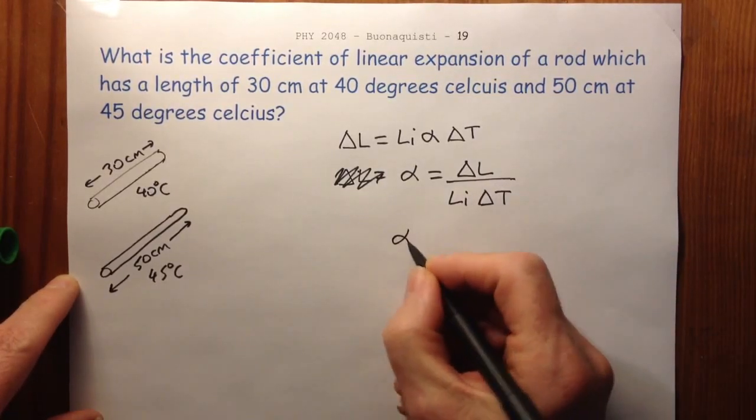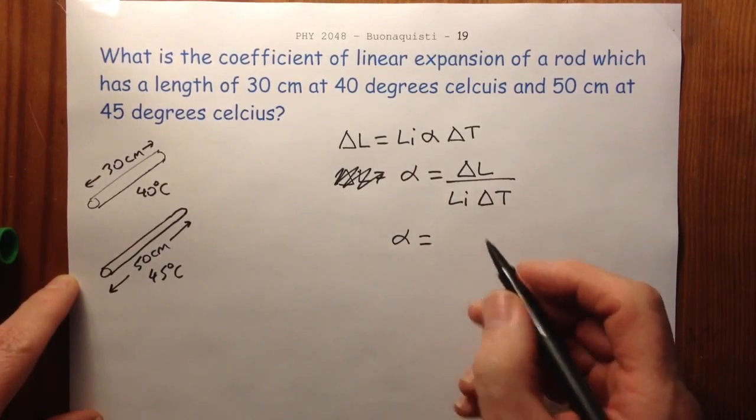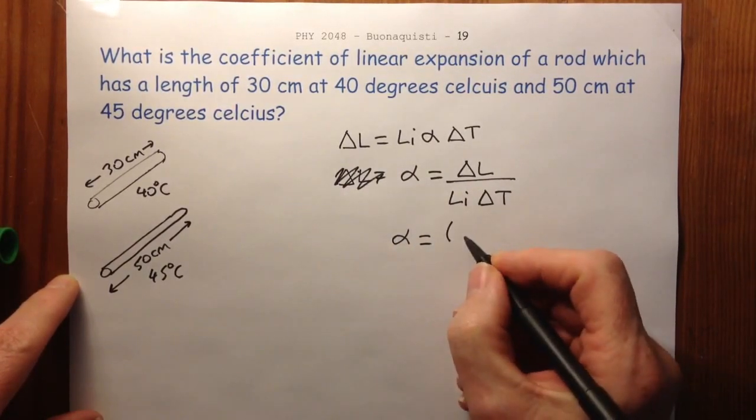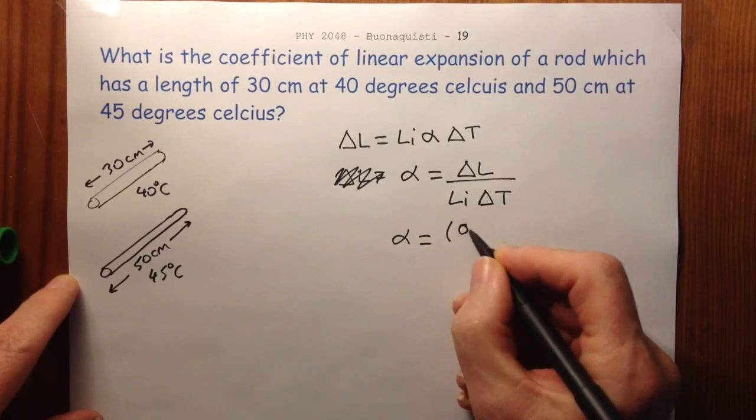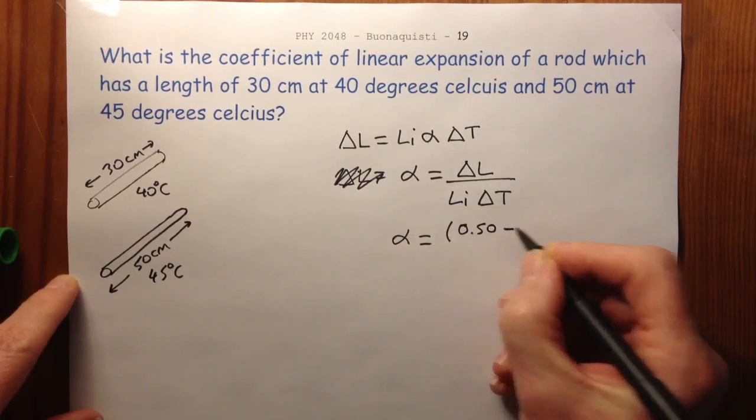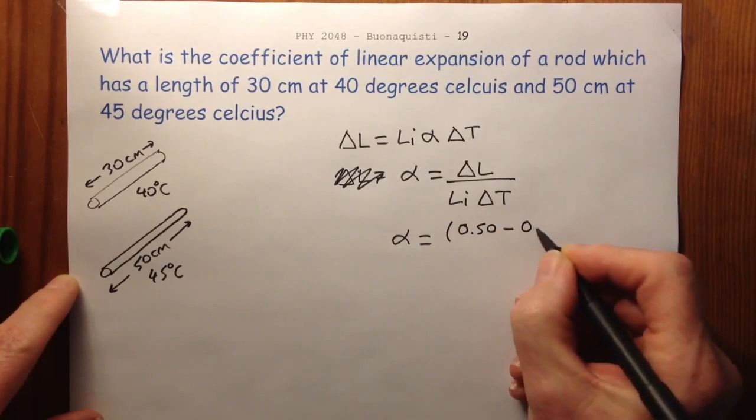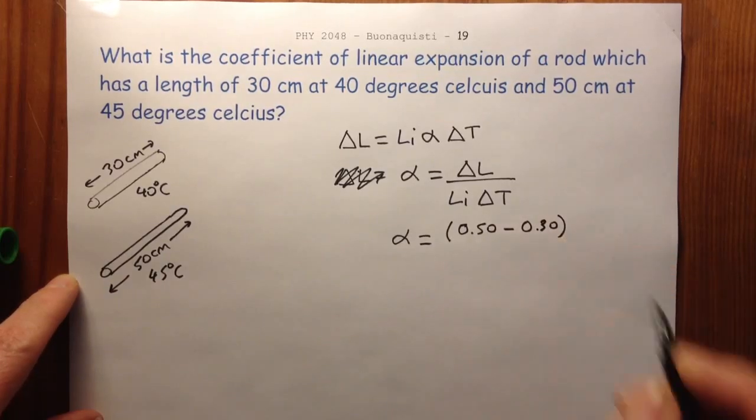So the coefficient of linear expansion equals the change in length, which is 0.50 minus 0.30, because I want to work in meters.